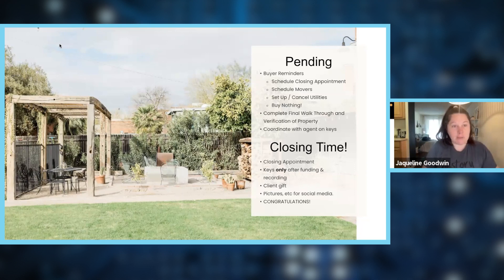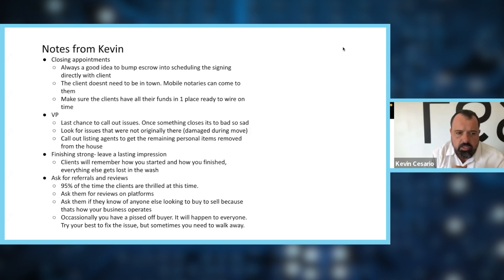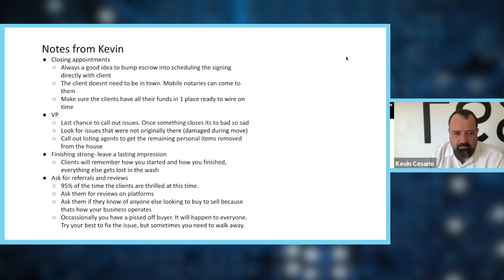You'll do your AVID at the time of inspections, and at the final walkthrough you'll complete the Verification of Property form — it's simple, just a text box: it all looks good, or if it doesn't, you write in specifics. For closing appointments, I like to bump escrow to make sure they reach out to the clients directly — it's also a good way to get a pulse on where everything is. The client doesn't need to be in town; a mobile notary can come to them wherever they are in the world.